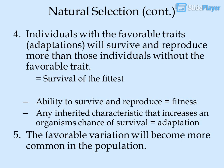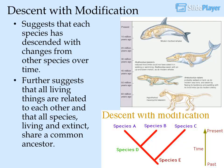The favorable variation will become more common in the population. Descent with modification suggests that each species has descended with changes from other species over time, and further suggests that all living things are related to each other and that all species, living and extinct, share a common ancestor.